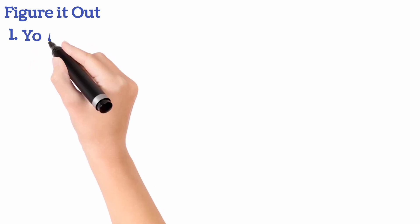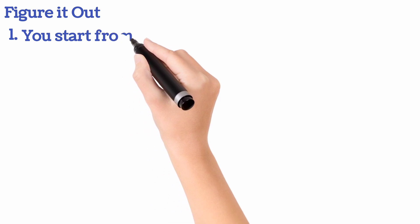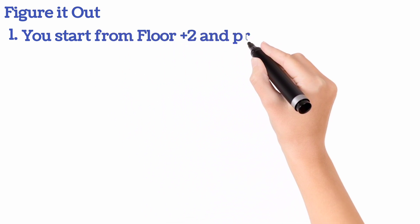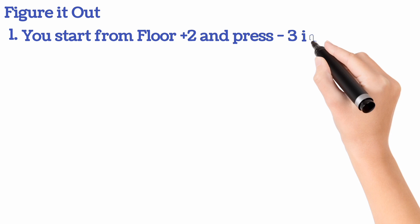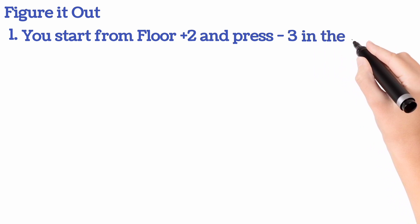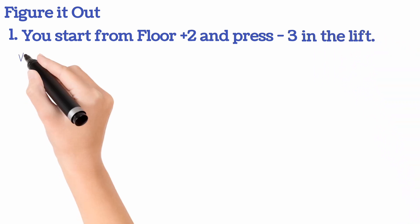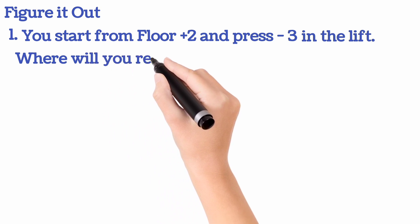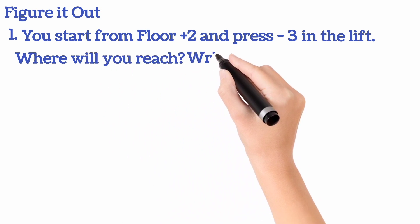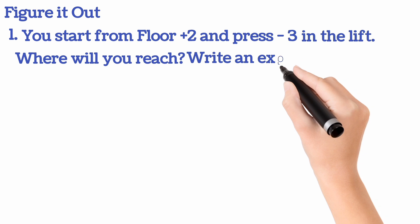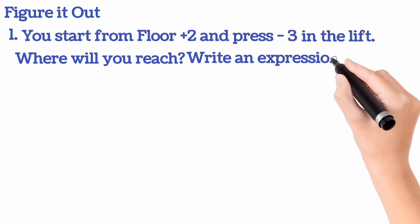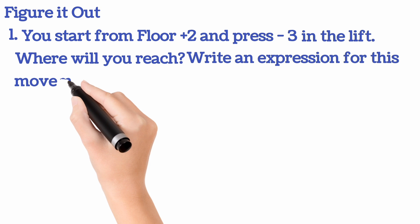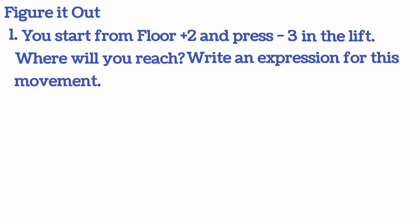Sum number 1: you start from floor plus 2 — meaning the second floor — and press minus 3 in the lift. Where will you reach? If you press the button of minus 3 in the lift, where will you reach? I will also write an expression for this movement.